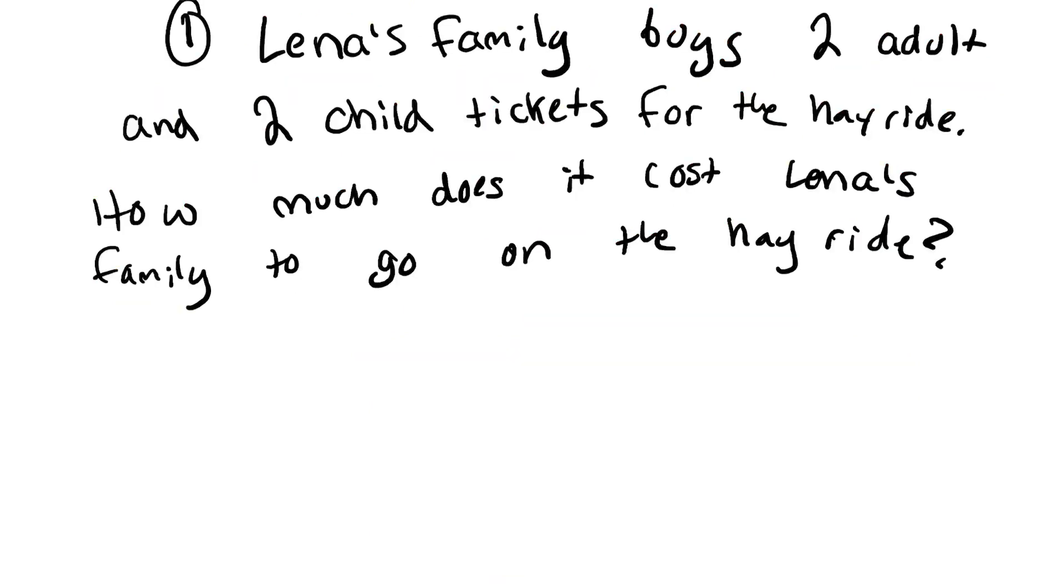Let's read it. It says, Lena's family buys two adult tickets and two child tickets for the Hayride. How much does it cost Lena's family to go on the Hayride? So we have to think about the RDW process. So first we have to read it. So let's just read it again. Lena's family buys two adult and two child tickets for the Hayride. How much does it cost Lena's family to go on the Hayride? So what are we doing? Are we multiplying, dividing, subtracting, or adding? So we have to do some addition.